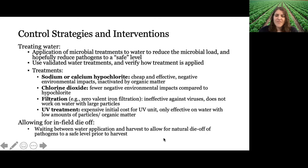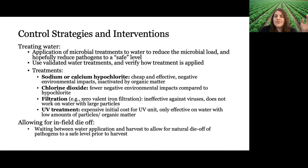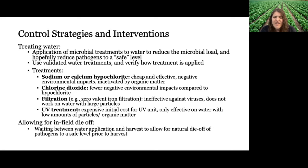Waiting between water application and harvest is a tougher strategy to follow because you don't have as much control over when your crops need to be watered. You need to irrigate when you need to irrigate. If your irrigation water just failed microbiological water quality testing and you need to wait 14 days, you can't just do that — because then your crops will probably die. So this is a tough one to follow in general, but it is an option as a control strategy.